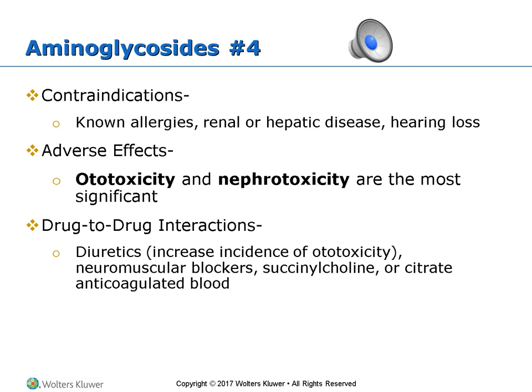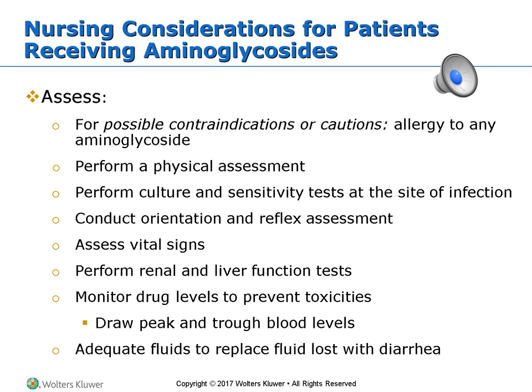Aminoglycosides have drug interactions: tobramycin taken with a diuretic like furosemide (Lasix) increases the incidence of ototoxicity, and it can also have effects if they're on a blood thinner. When giving aminoglycosides, assess for allergies, renal and hepatic history, and any previous hearing loss. Assess orientation because it can impact the central nervous system. Monitor drug levels with peaks and troughs to ensure safe therapeutic levels.